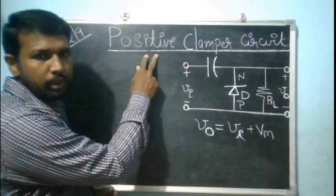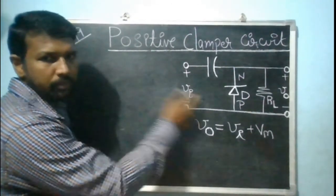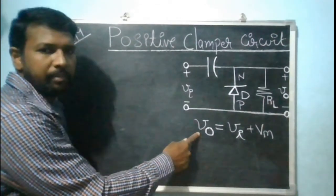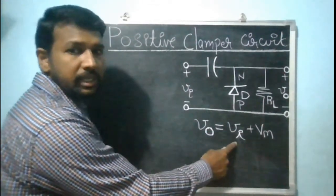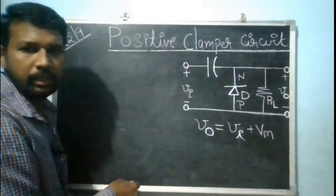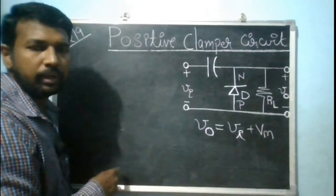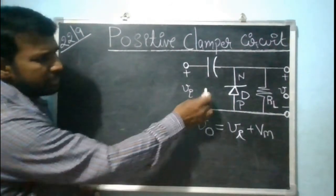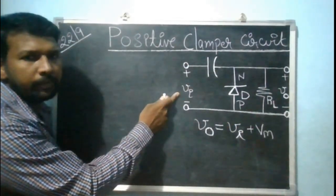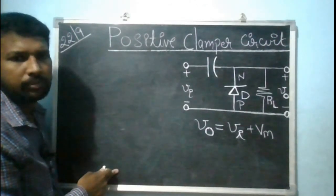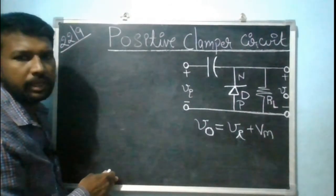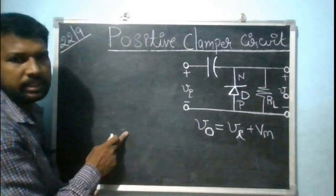Let us consider the positive clamper circuit diagram. The output is the AC input signal with some DC quantity added. Before analyzing, circuit analysis means finding the output voltage range for the entire input range — whether sinusoidal or square waveform. We will analyze this circuit considering three cases.